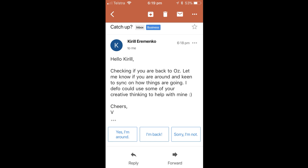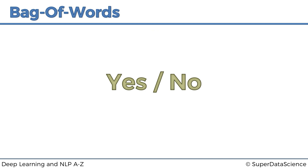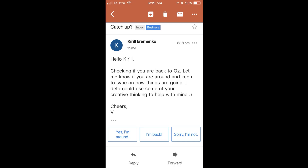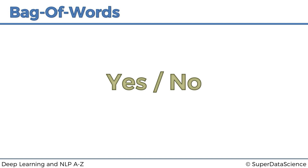So what can we do with this email? We're going to start off simple and create a model that gives us a yes/no response, because the question is essentially: 'Are you back in Australia? Are you around and keen to sync?' Yes or no. Of course a longer response is better socially, but let's try to get a yes/no response first — that's the first step into NLP, and then we'll expand further.